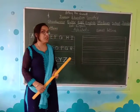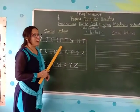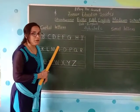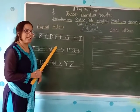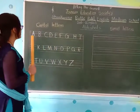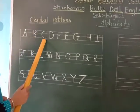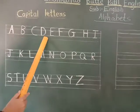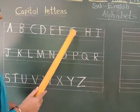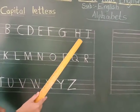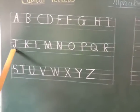In the previous video, we learned: how many alphabets are there? 26. Come on, let us count. 1, 2, 3, 4, 5, 6, 7, 8, 9, 10.